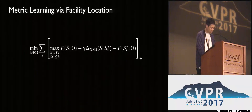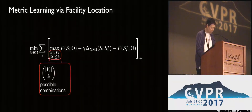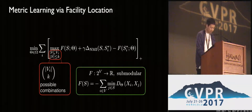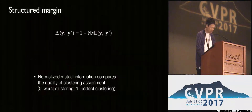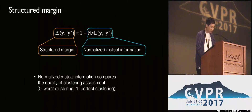Here's the final loss function for our approach. We enforce the facility location score given the ground truth clustering to be higher than the score given to any other clustering assignment, at least by the structured margin delta. Note that our loss of method inference is NP-hard but is approximately submodular. Our structured margin term is 1 minus the NMI term. NMI compares the quality of a clustering assignment and outputs a score from 0 to 1, where 0 means worst clustering and 1 means perfect clustering.